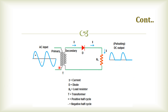The circuit diagram of the half wave rectifier is shown in the figure. Here we are using an AC input signal, P1 and P2 as a primary coil, S1 and S2 as a secondary coil, a diode, a load resistor, and a transformer. In an AC signal, we have a positive half cycle and a negative half cycle. We will discuss the components and their uses one by one. First one: AC source. The AC source supplies alternating current to the circuit. The alternating current is represented by a sinusoidal waveform.